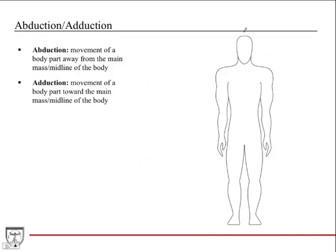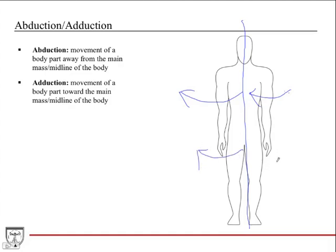Abduction and adduction require a midline reference. Abduction is movement of a body part away from the midline, and adduction is movement towards the midline. These are often referred to for movements in the upper and lower extremities. Abduction of the lower extremity moves the leg out away from the body; adduction brings the leg back in towards the midline.